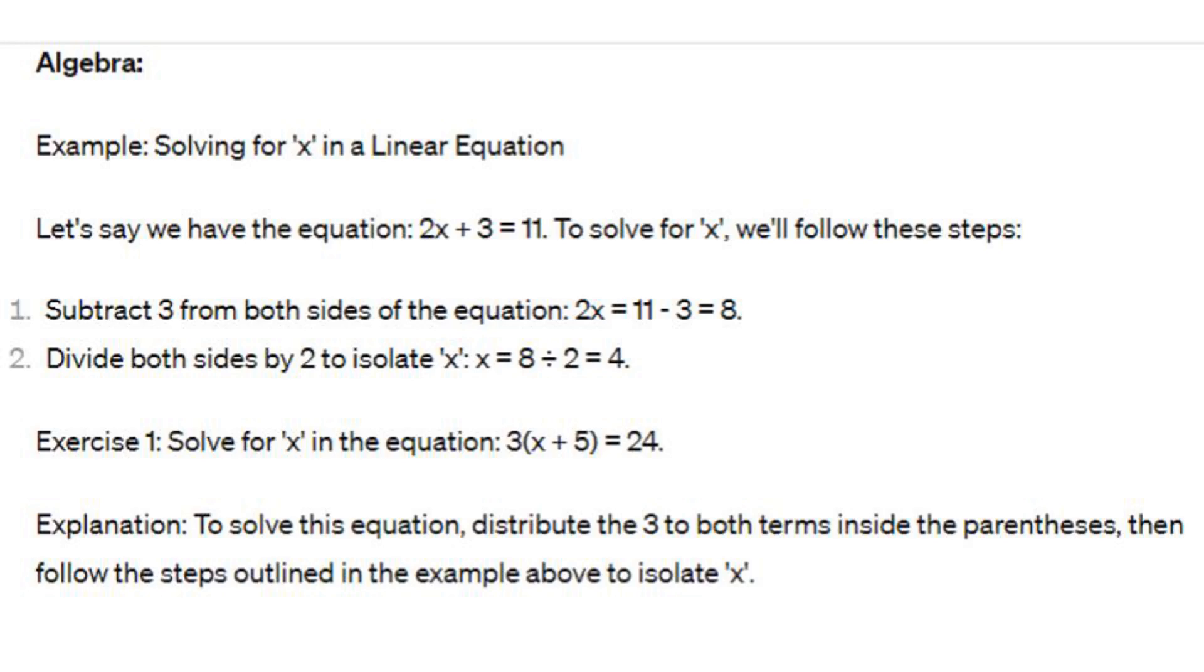Algebra example: solving for X in a linear equation. Let's say we have the equation 2X plus 3 equals 11. To solve for X, we'll follow these steps. 1. Subtract 3 from both sides of the equation. 2X equals 11 minus 3 equals 8. 2. Divide both sides by 2 to isolate X. X equals 8 divided by 2 equals 4. Exercise 1: Solve for X in the equation 3X plus 5 equals 24. Explanation: To solve this equation, distribute the 3 to both terms inside the parentheses, then follow the steps outlined in the example above to isolate X.